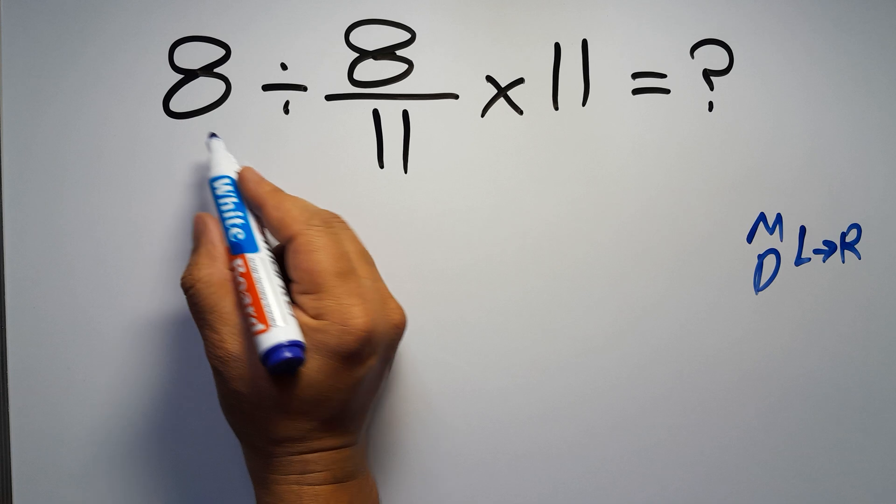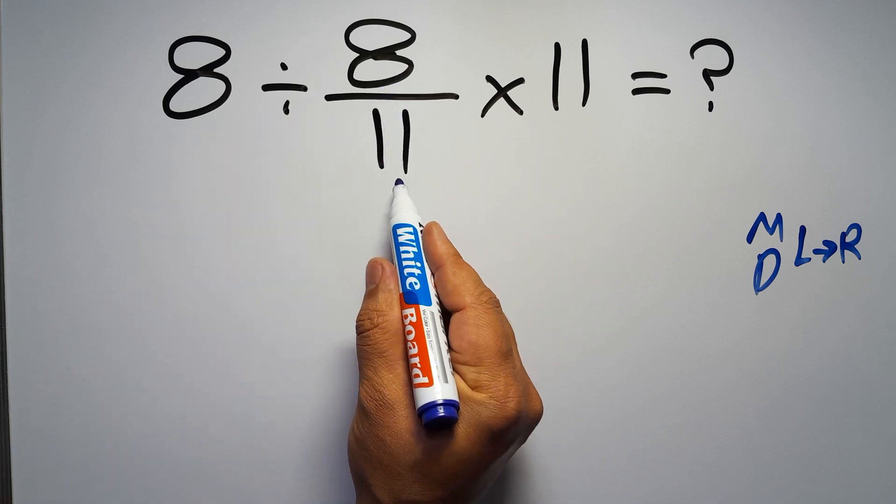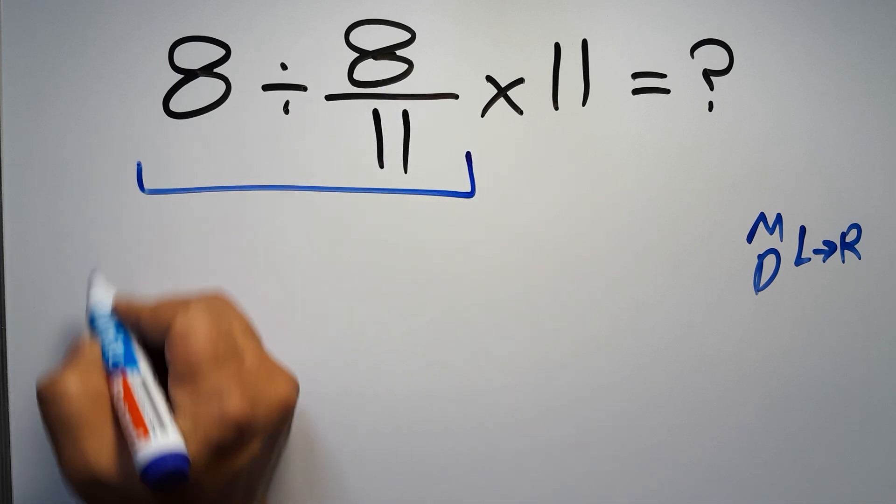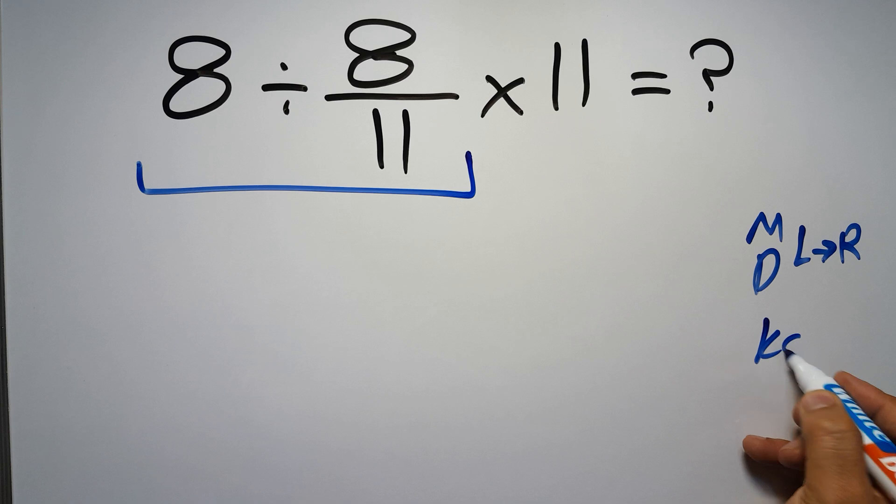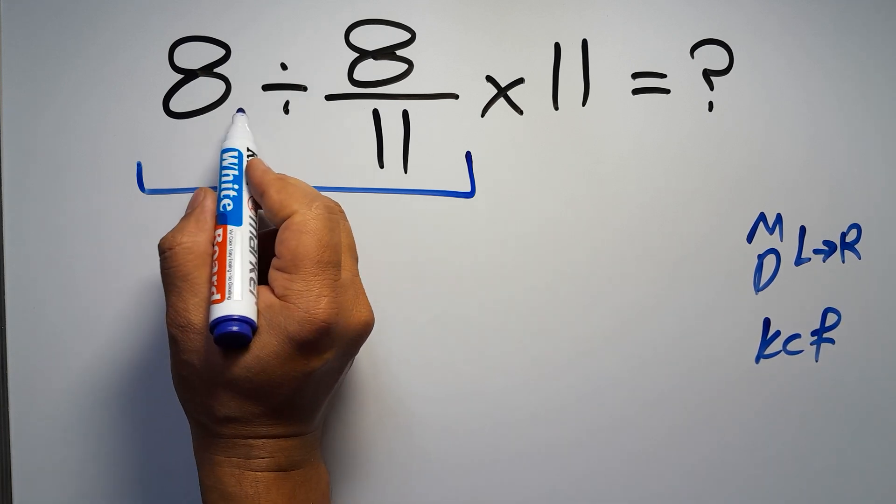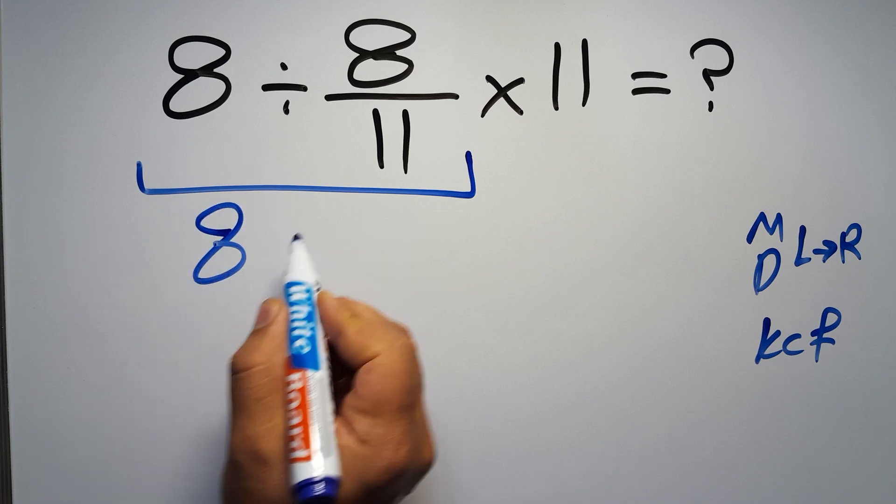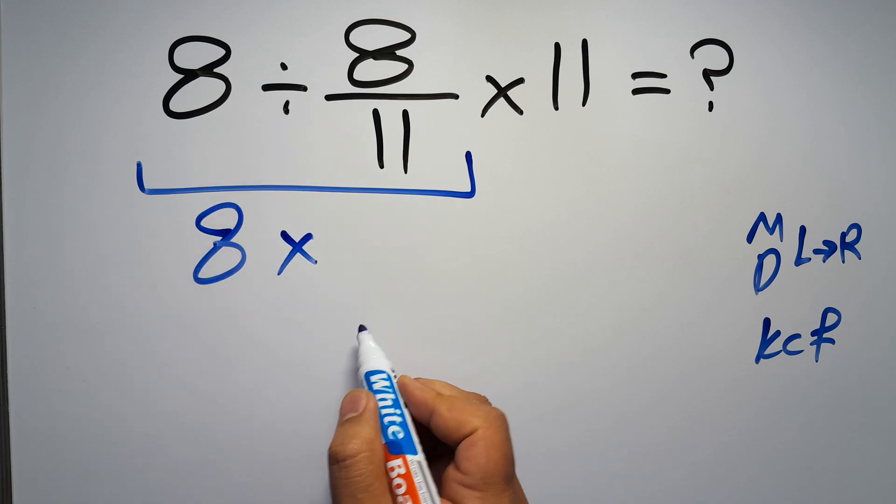So first, this division: 8 divided by 8 over 11. According to the KCF rule, K stands for keep, C stands for change, and F stands for flip. We can write: keep the first fraction, change division to multiplication, and flip the second fraction.